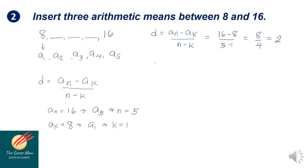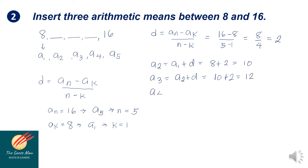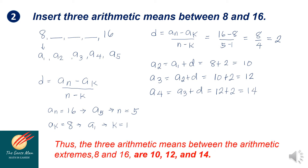Now, to get a sub 2, that is a sub 1 plus the common difference: 8 plus 2 equals 10. Then a sub 3 equals a sub 2 plus the common difference: 10 plus 2 equals 12. Next, a sub 4 equals a sub 3 plus the common difference: 12 plus 2 equals 14. So the three arithmetic means between the arithmetic extremes 8 and 16 are 10, 12, and 14.